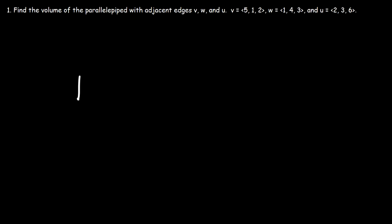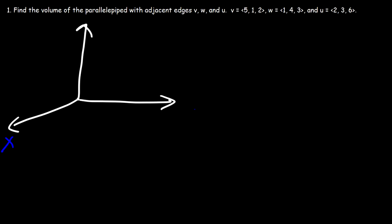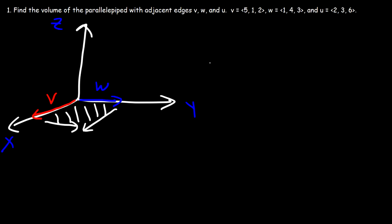Let's begin by drawing a picture. Here we have the x-axis, the y-axis, and the z-axis. Let's say that vector V is along the x-axis and vector W is along the y-axis. We could use these two vectors to form a parallelogram, and the area of that parallelogram is equal to the magnitude of the cross product of those two vectors.